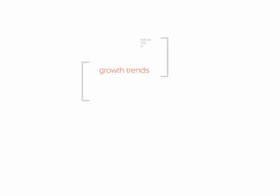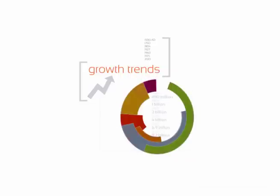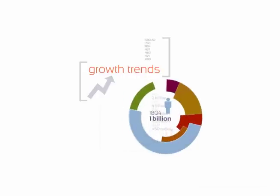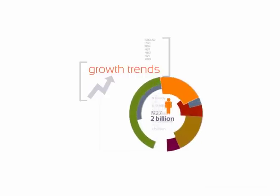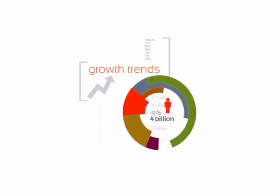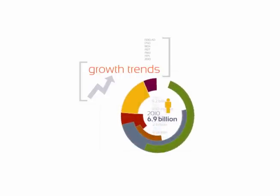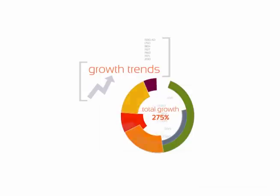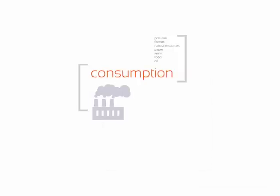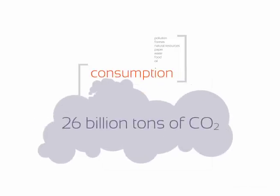Growth trends: this population growth only recently occurred. In the 1500s there were about 450 million people worldwide. By 1804, 1 billion people had arrived. 1927: 2 billion. 1975: 4 billion. 2010: 6.9 billion people. It is estimated by 2050, 9.2 billion people will be here. Since the Industrial Revolution alone, the world's population has grown 275 percent, compared to a seven percent growth rate the century before it.